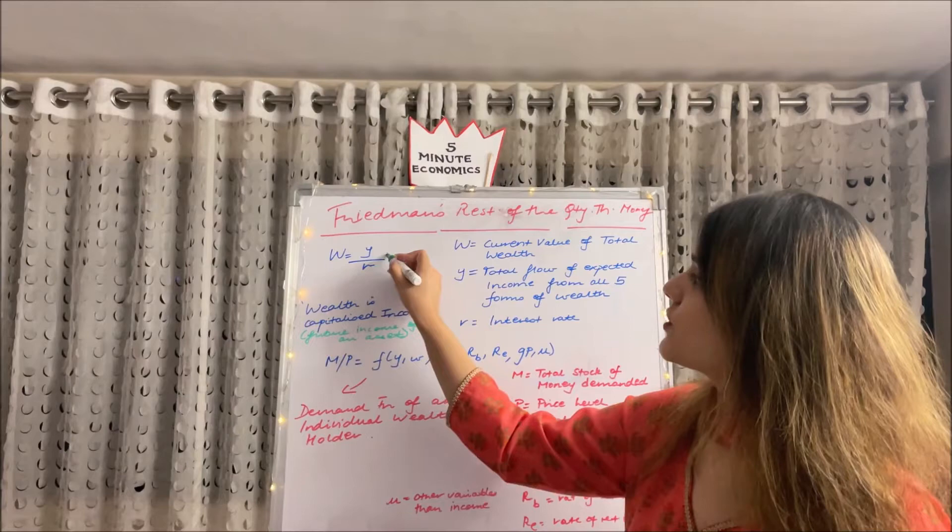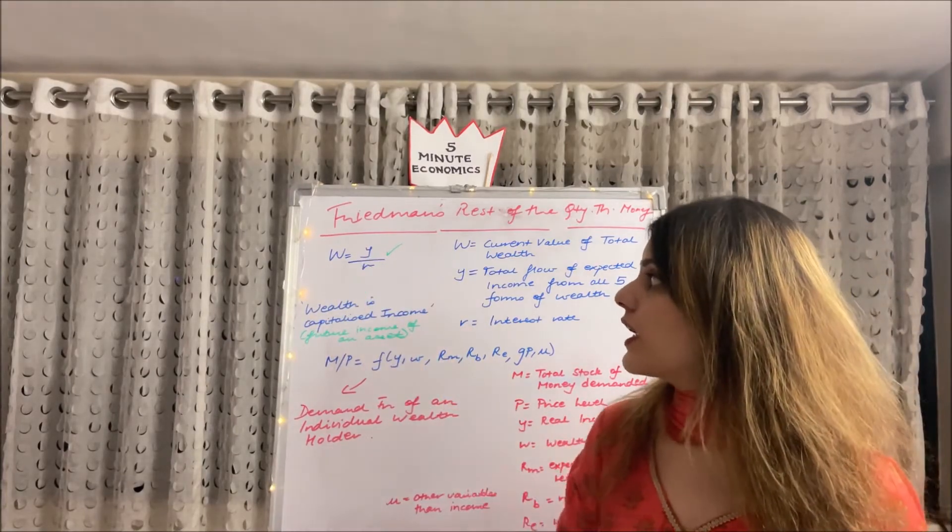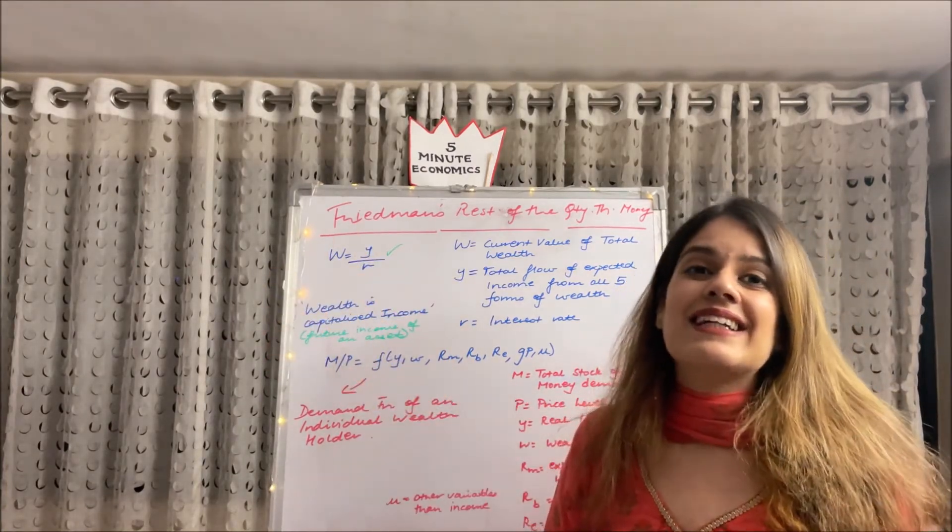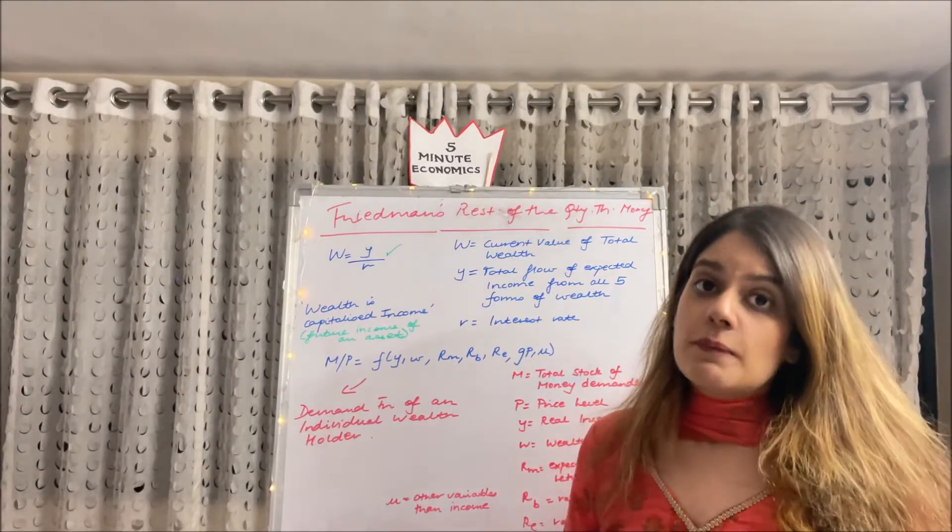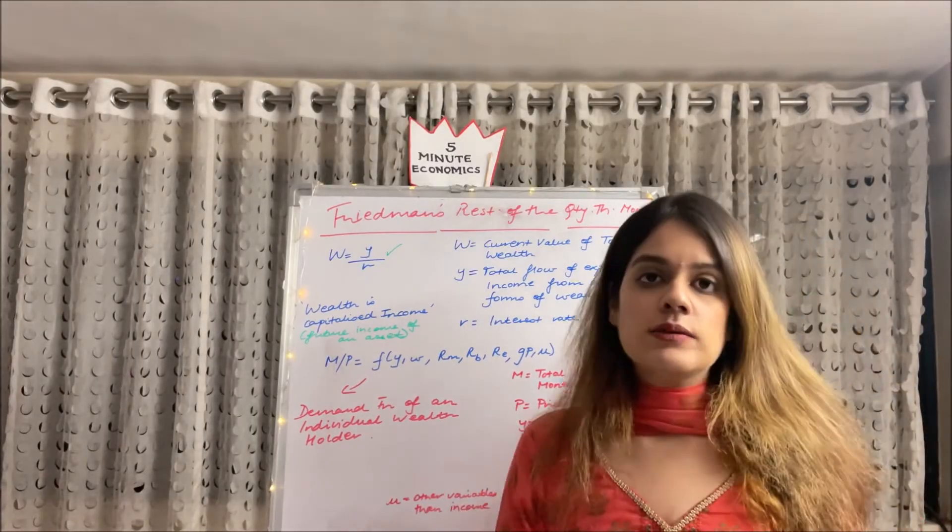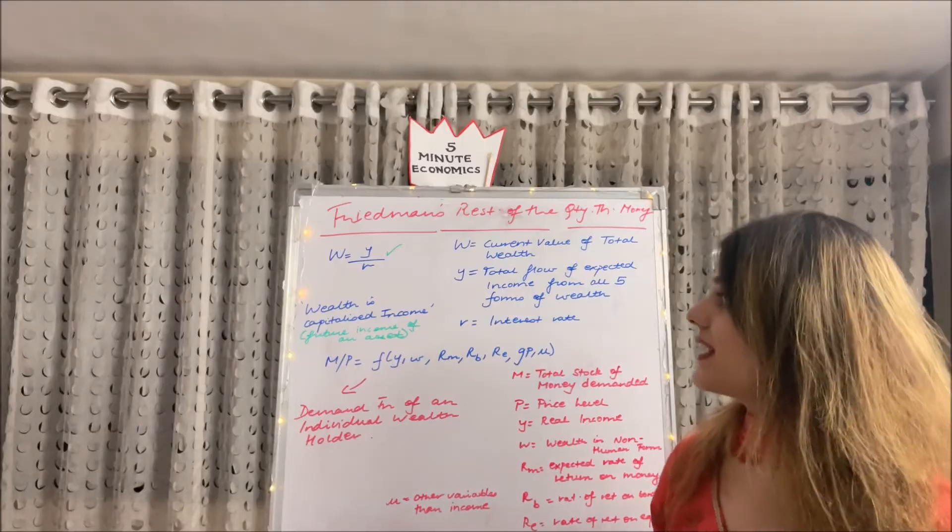I am sorry there is no simple way which I can help you with this equation. It is an equation which you have to remember: W equals Y upon R, which actually represents that wealth is like capitalized income. What is capitalized income? Basically future income of any asset is known as capitalized income.